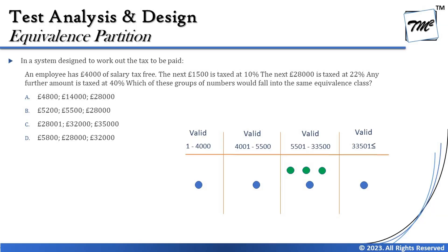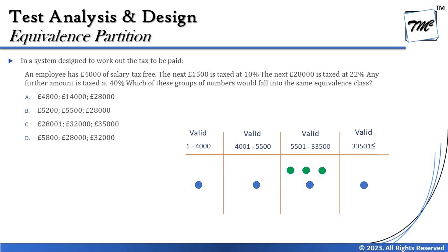So up to 4,000 the salary is tax-free. The next 1,500 is taxed at 10%. Many people go wrong here thinking 'next 1,500' is within 4,000 — but 'next' means on top of 4,000. So the second range is 4,001 to 5,500 (adding 1,500 to 4,000). Continuing: the next 28,000 is taxed at 22%, giving a third slab of 5,501 to 33,500 (adding 28,000 to 5,500).